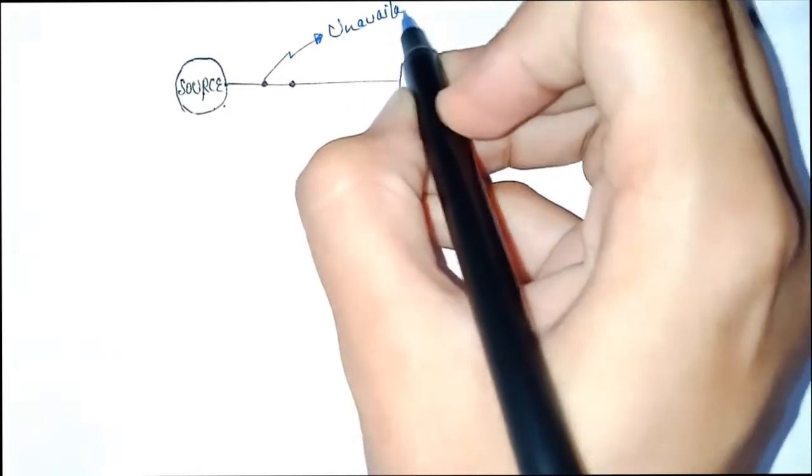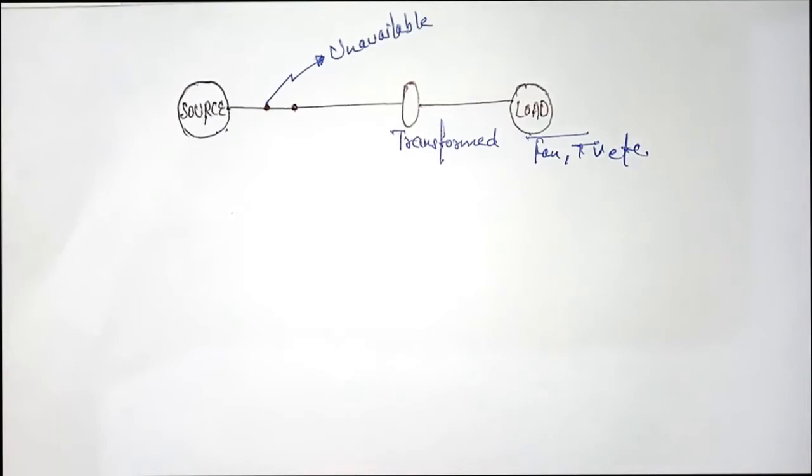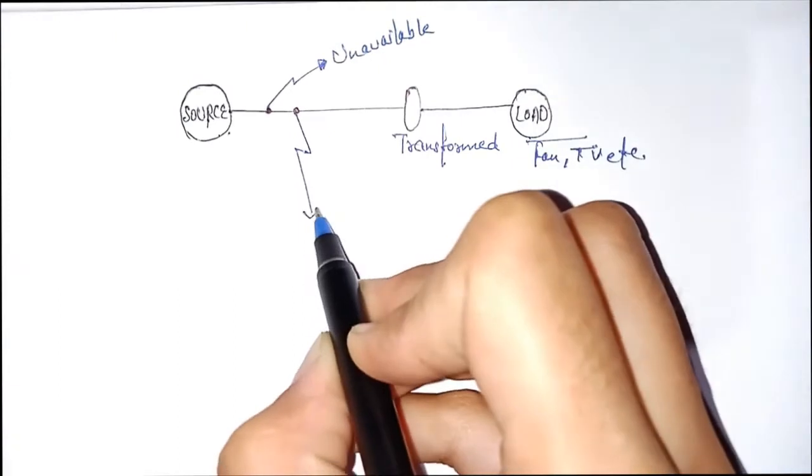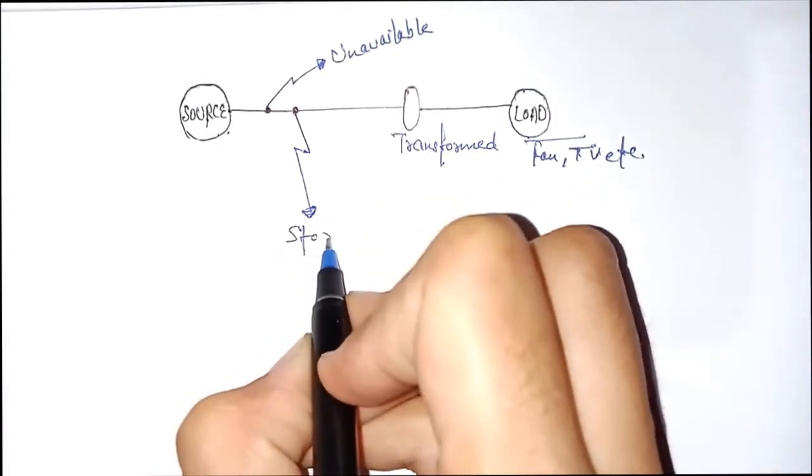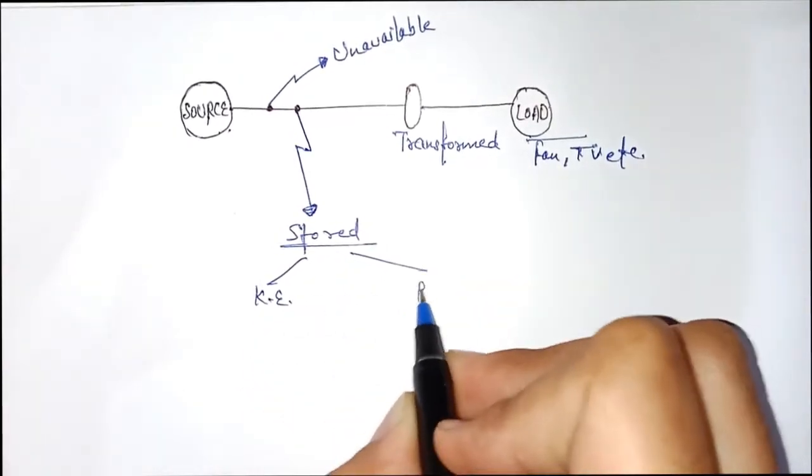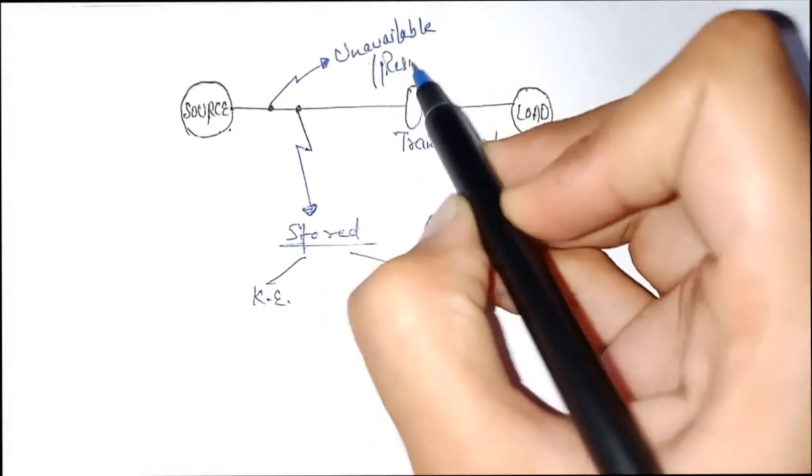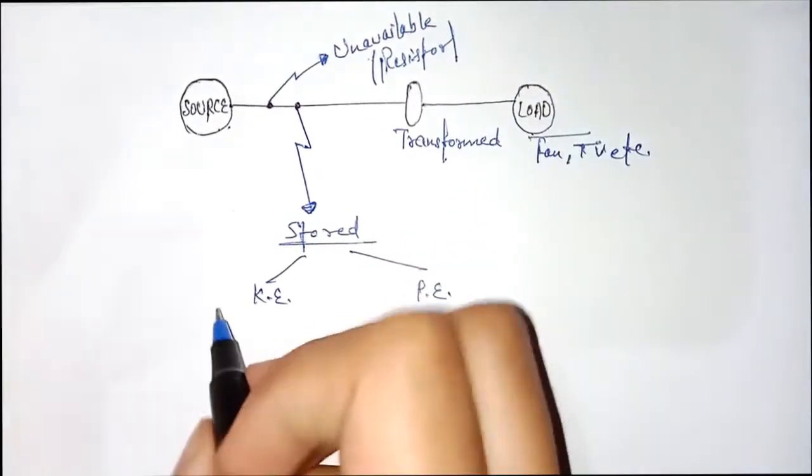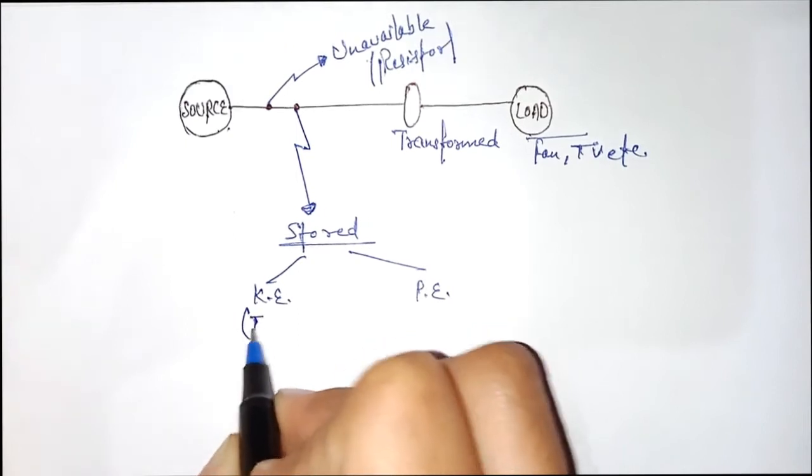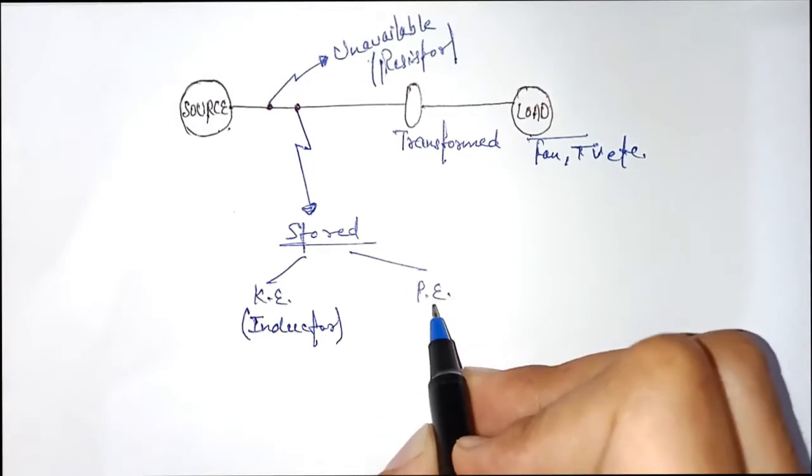Some energy becomes unavailable or is lost, and some energy is stored in the form of kinetic energy or potential energy. Energy becomes unavailable due to resistors, kinetic energy is stored in inductors, and energy is stored in potential form in capacitors.